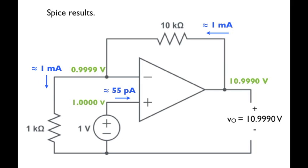We see that the output voltage is equal to 10.999 volts, or to within 1 millivolt, 11 volts. So the input voltage has been multiplied by 11. But I'd like to draw your attention to some of the other voltages and currents in this circuit.